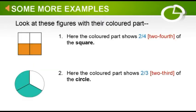Some more examples of fractions: when you look at the first figure, this square has been divided into four equal parts and only two parts have been colored. It can be represented as two by four and read as two fourths. In the second example, a whole circle has been divided into three equal parts and two parts combined together represent two thirds, expressed as two by three.